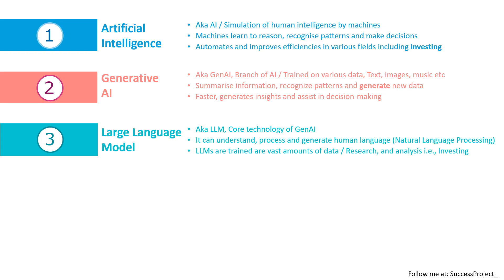The third idea is the large language model, also called as LLM. This is the heart or the core technology of Gen AI. This LLM can understand, process, and generate human language, for which it uses another technology called natural language processing. These LLMs are trained on vast amounts of data, thereby helping for research and analysis, which is very much essential for investing.